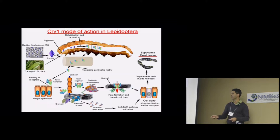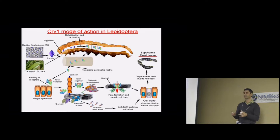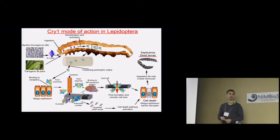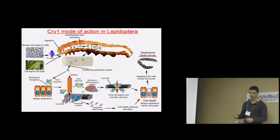There's another mechanism that has been proposed: that binding of the toxin monomer to the cadherin activates intracellular cell death pathways. But this has only been demonstrated in insect ovarian cell cultures, and there is not a lot of support in the literature for this alternative pathway. Alterations in any of these steps can potentially result in resistance to transgenic Bt crops or to Bt toxins.